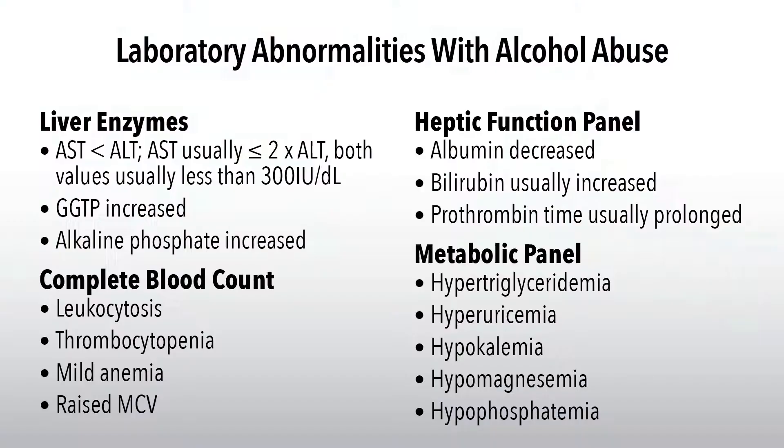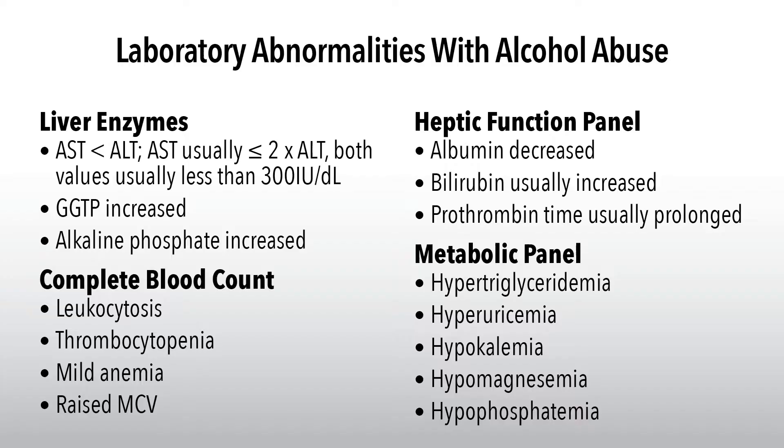Evaluate for other causes of liver dysfunction including infection and heart disease. In early stages, ALT may be higher than AST and levels may be normal or mildly elevated. The GGT is commonly elevated in alcoholic liver disease but is not specific or sensitive for alcohol-induced liver injury — it can be elevated in fatty liver and NASH. Alkaline phosphatase is also typically increased but again is not sensitive or specific.